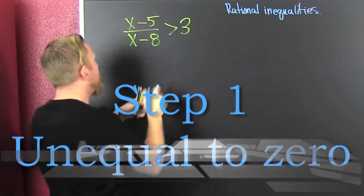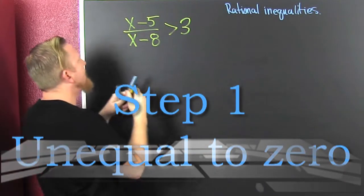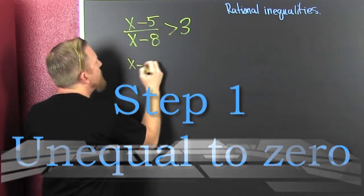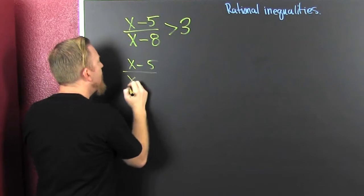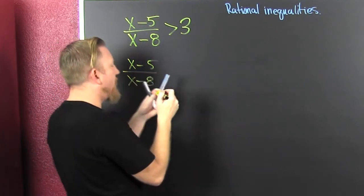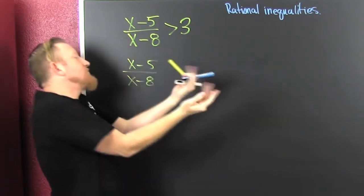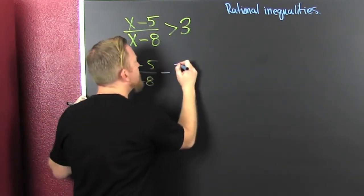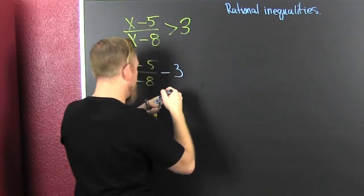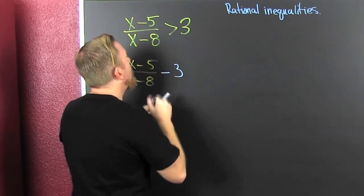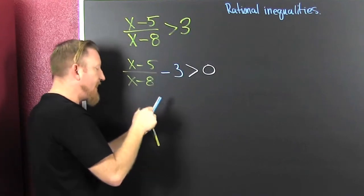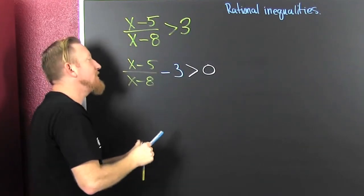First, we have to set it unequal to zero. We have x minus 5 divided by x minus 8. I subtract off that 3 and get it all over here — that's a 3 — and then that's going to be greater than zero.